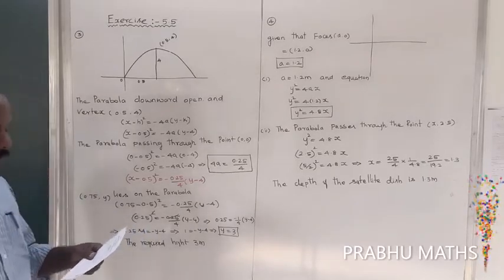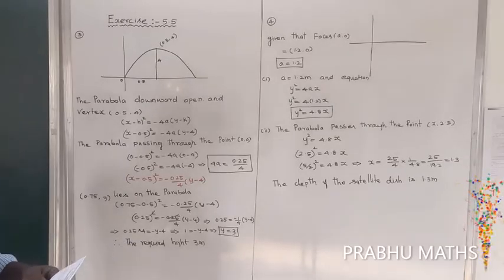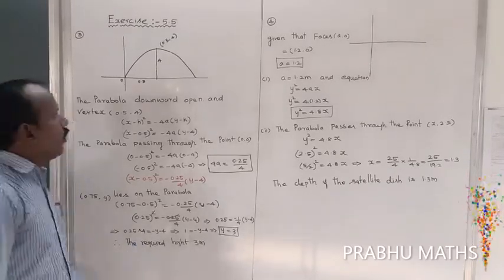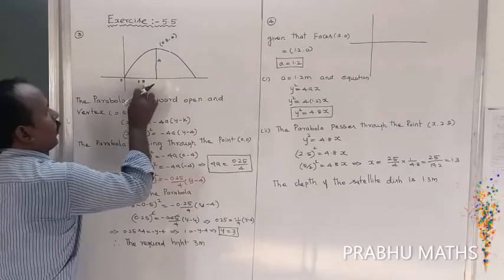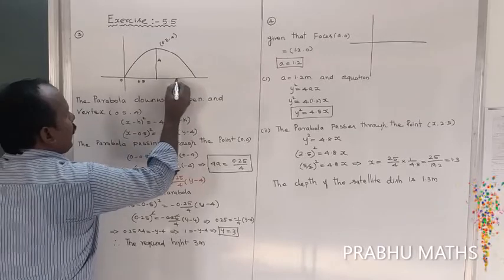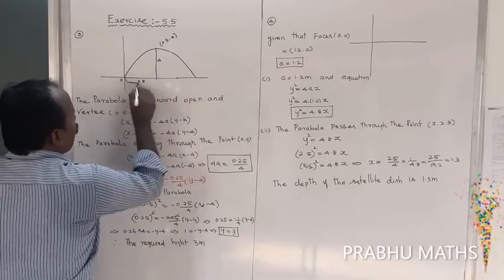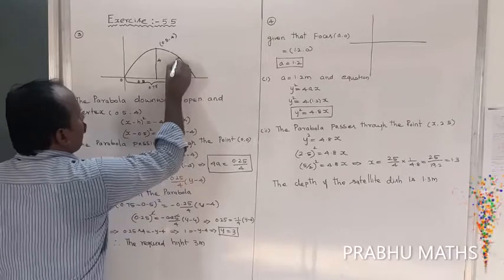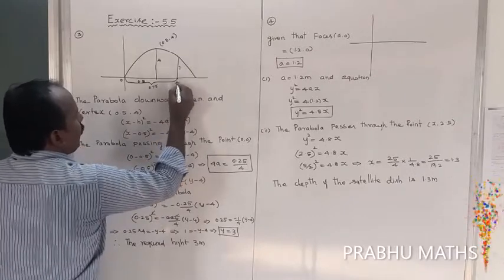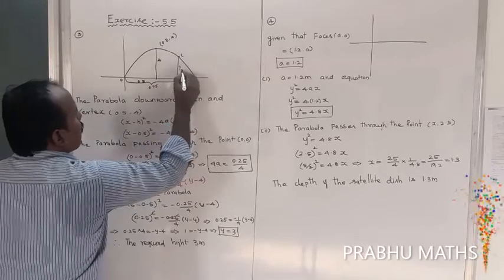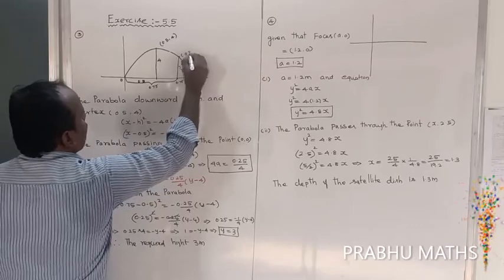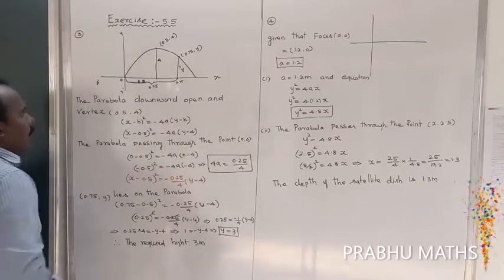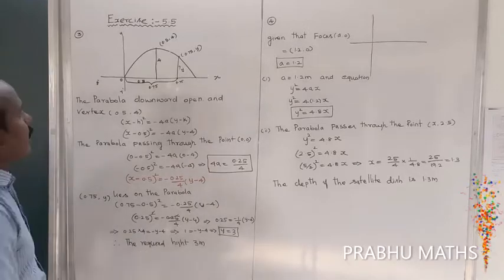Find the height of the water at a horizontal distance of 0.75 from the origin. So the point we need to find is (0.75, y), where y is the height we want to determine.